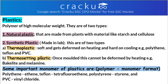Thermosetting plastics, once molded, are not going to deform even on heating. Examples of thermosetting plastics are Bakelite and melamine. Now let us see some important monomers of plastics.